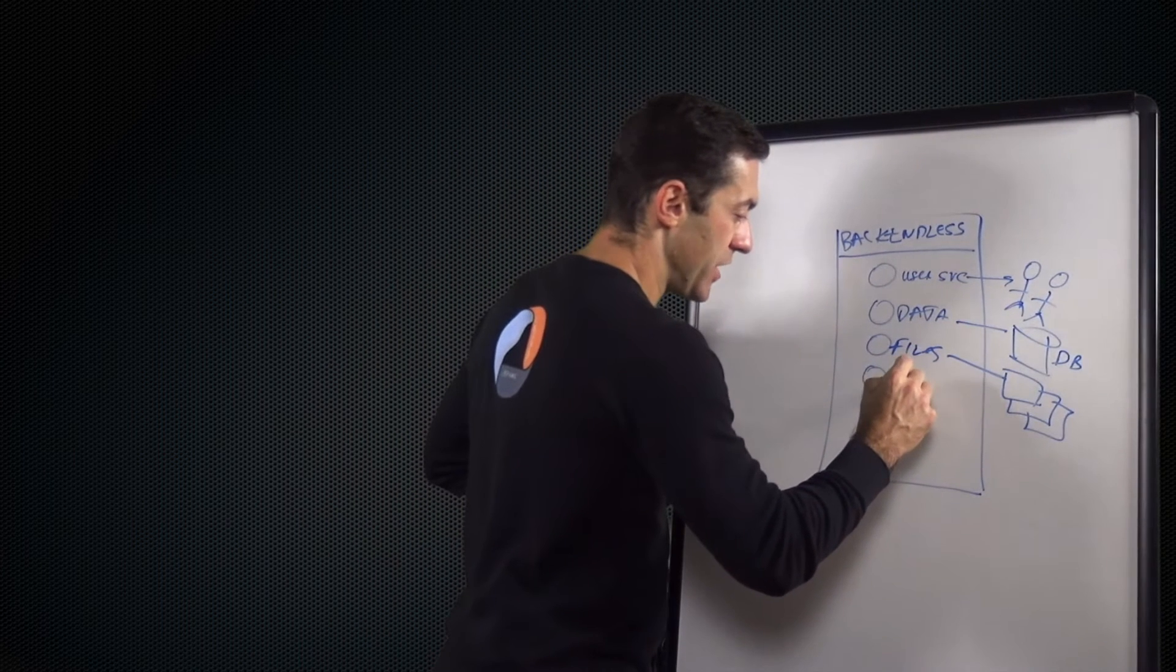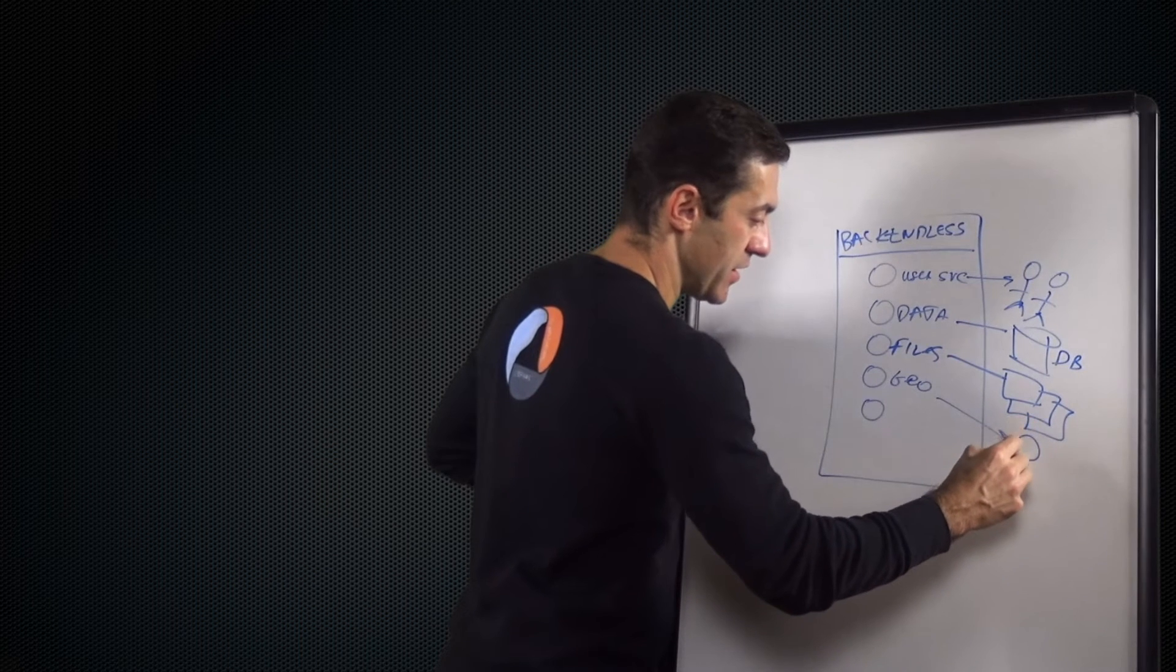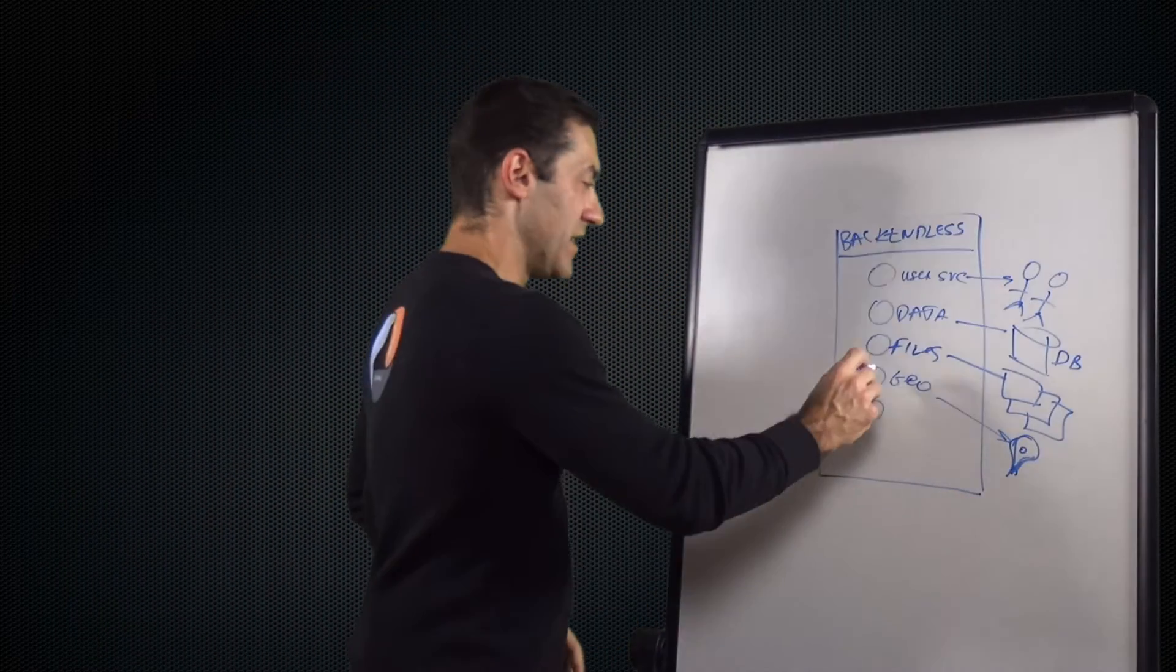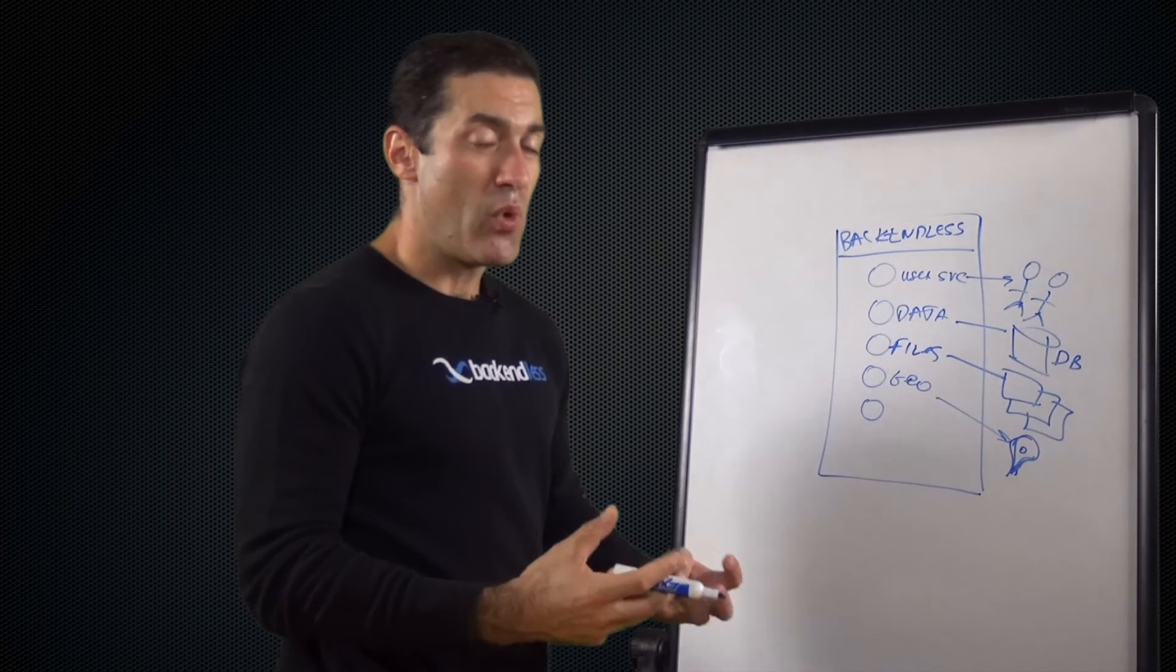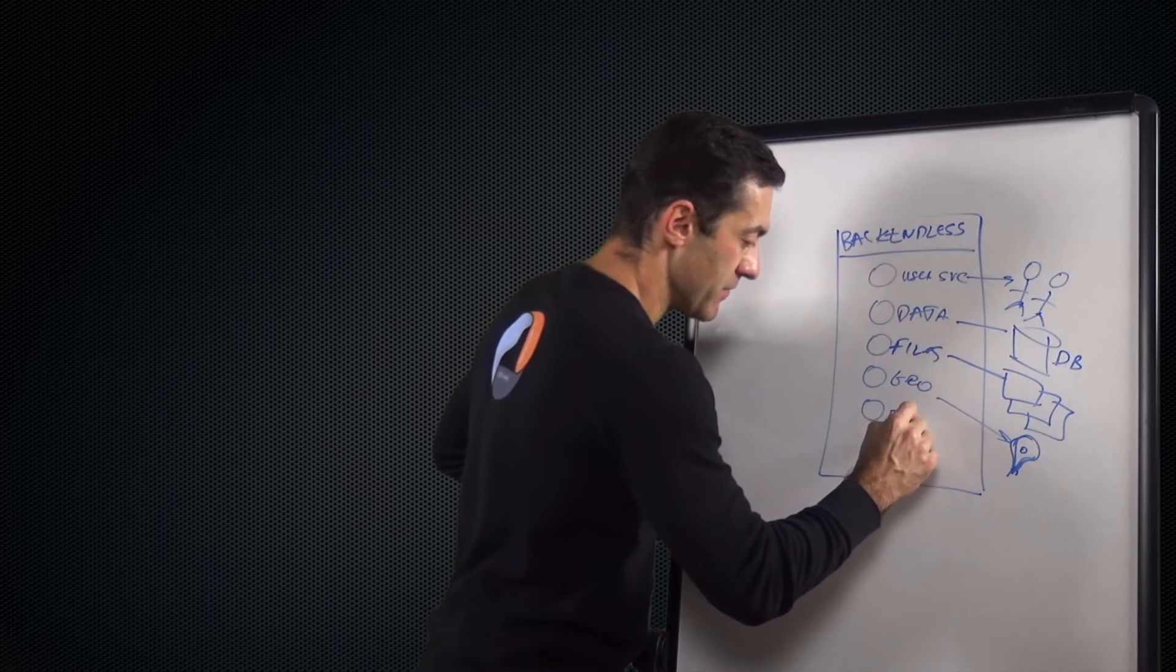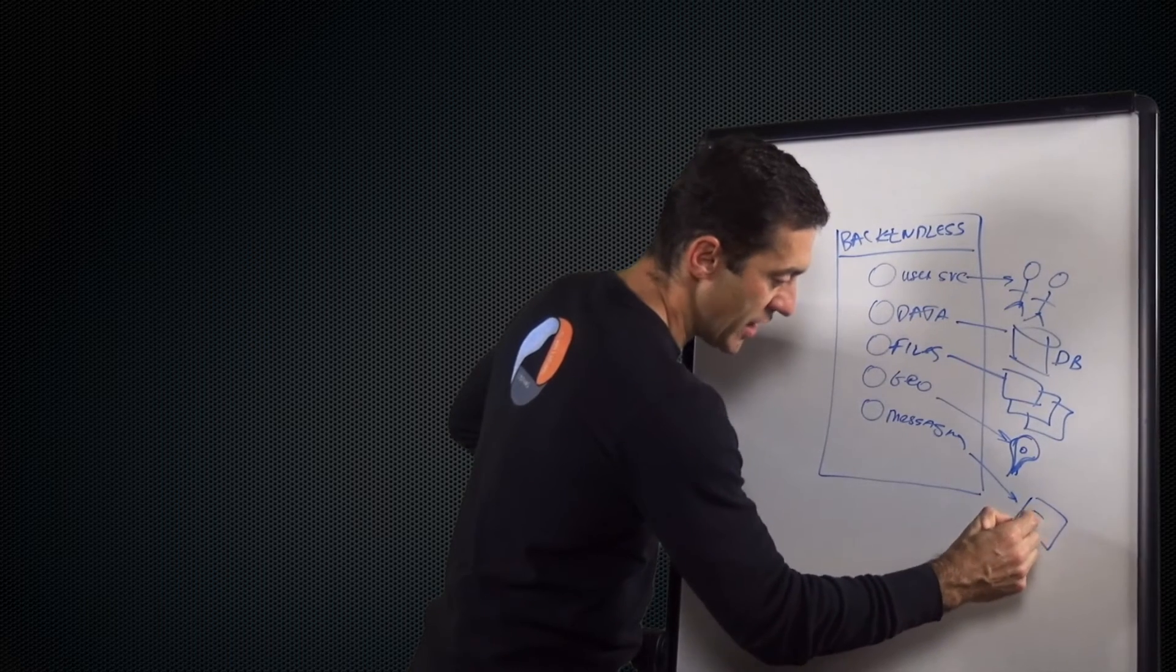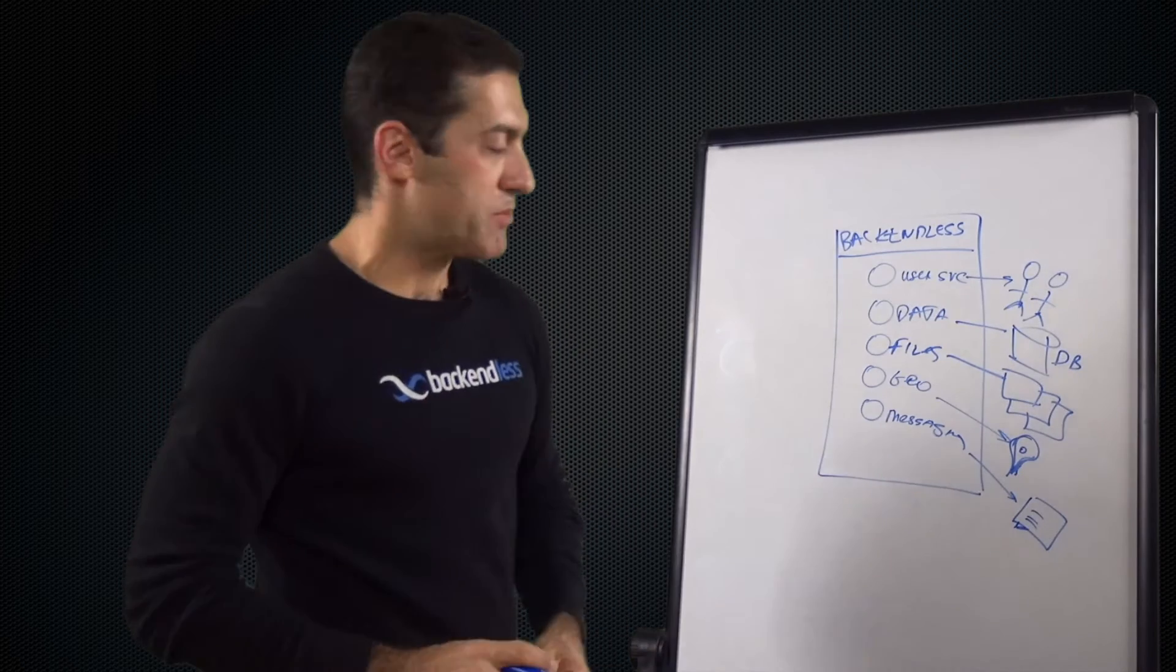Now we have a geolocation service, and that one works with—here's my kind of primitive marker. I'm not a good artist, but this is a marker. And the geolocation can manage and work with geopoints. We'll talk about it later. And then finally, we have a messaging service. A messaging service works with messages. So here's my kind of a little chat bubble, which could be a push notification message or a publish-subscribe message.